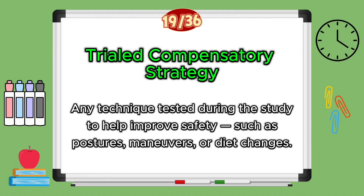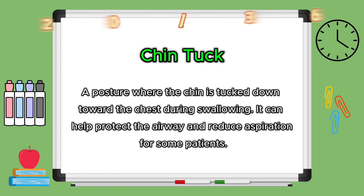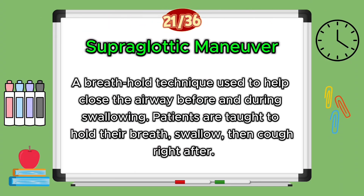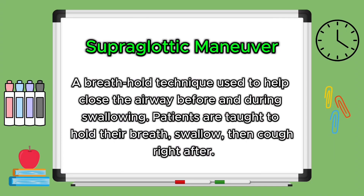A trial compensatory strategy is any technique tested during the study to help improve safety, such as postures, maneuvers, or diet changes. A chin tuck is a specific posture where the chin is tucked down toward the chest during your swallow — this can help protect the airway and reduce aspiration for some patients. A supraglottic maneuver is a breath-hold technique used to help close the airway before and during your swallow — you're taught to hold your breath, then swallow, then cough right after.